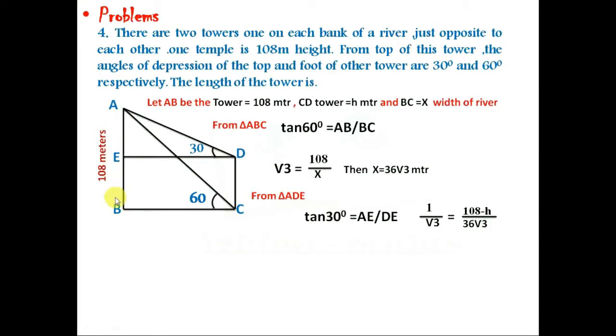Here we know that tan 30° equals 1 by root 3, and AE equals 108 minus H, and DE equals 36 root 3.